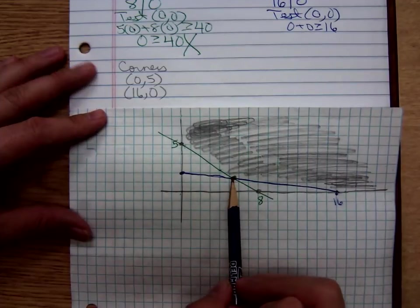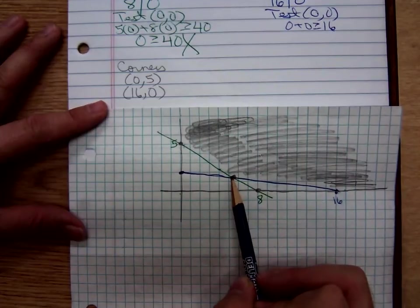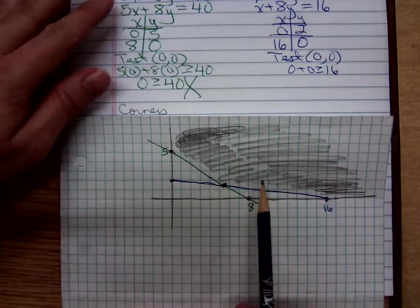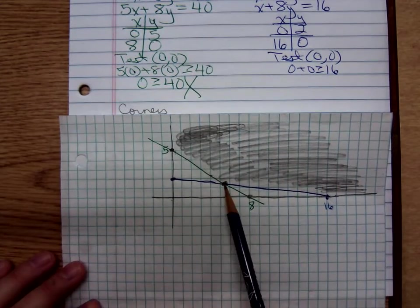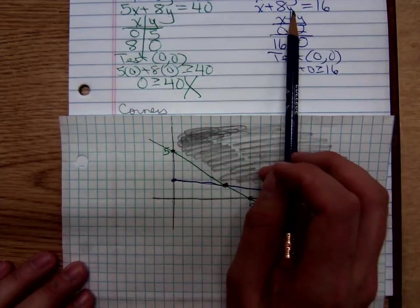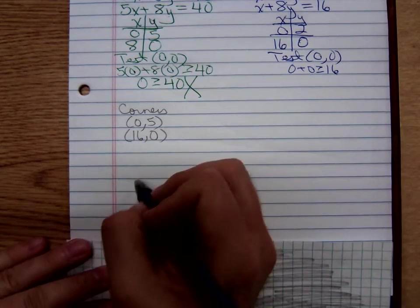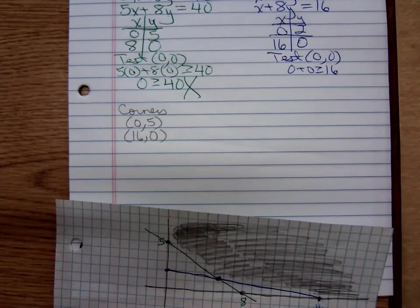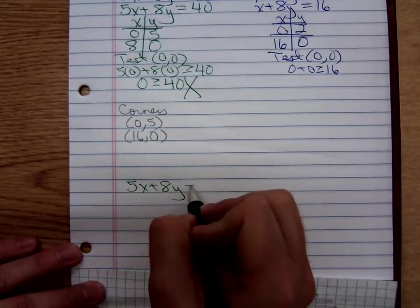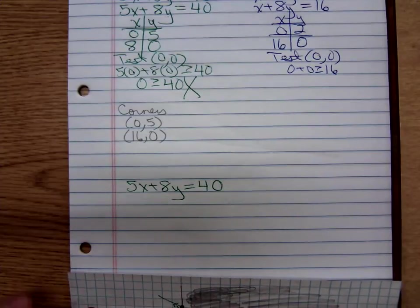But we need to find that corner point right there, the one in the middle. What I would do, I'd use, that was formed by the green line. This point of intersection was formed by the green line, 5x plus 8y equals 40, and the blue line, x plus 8y equals 16.